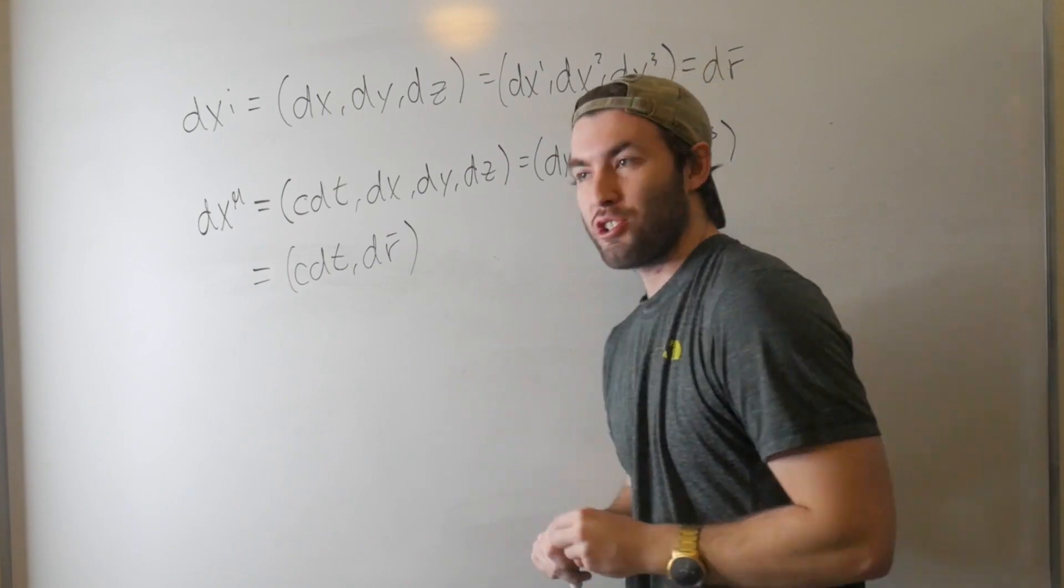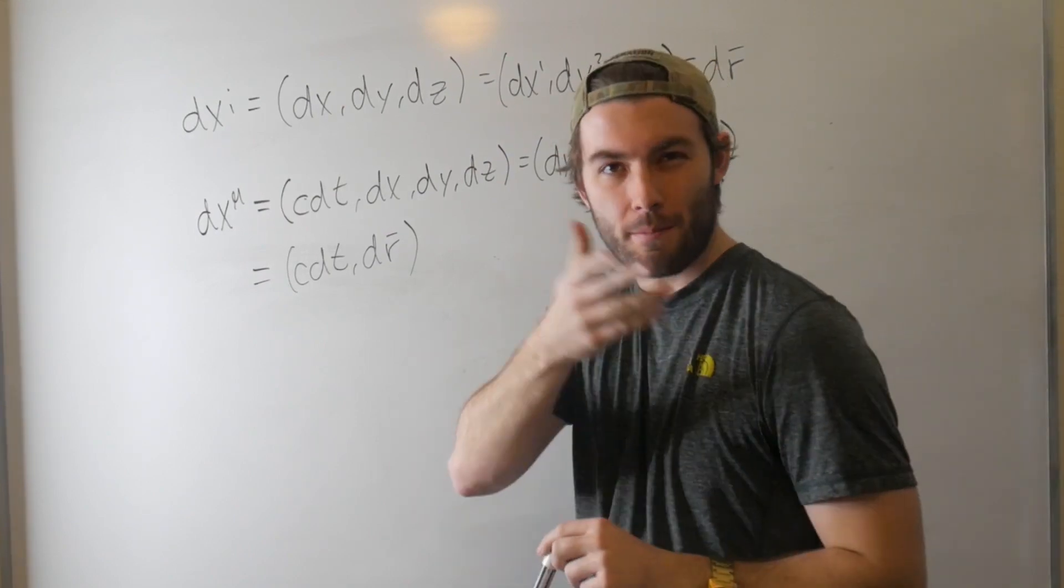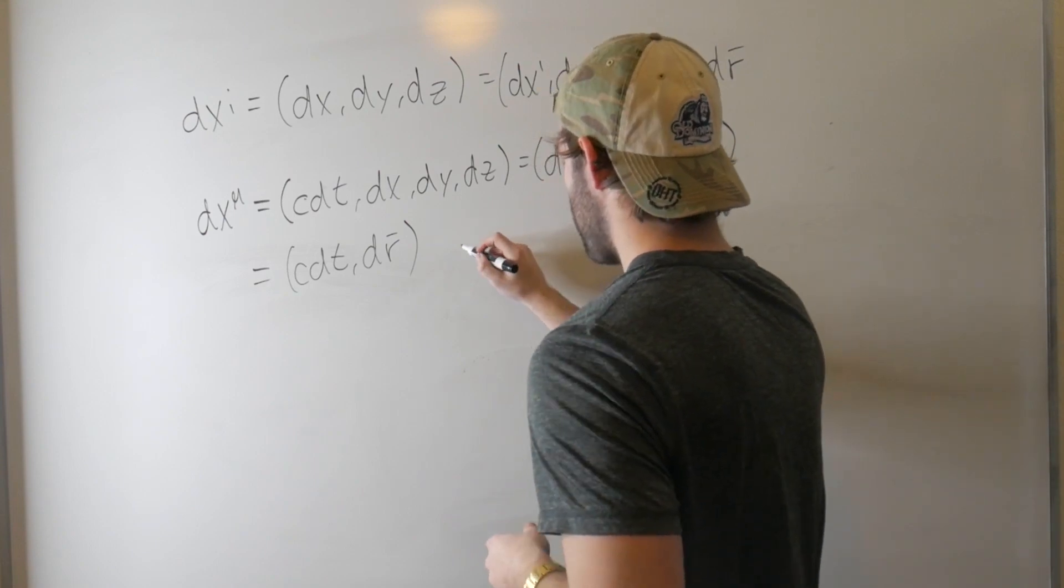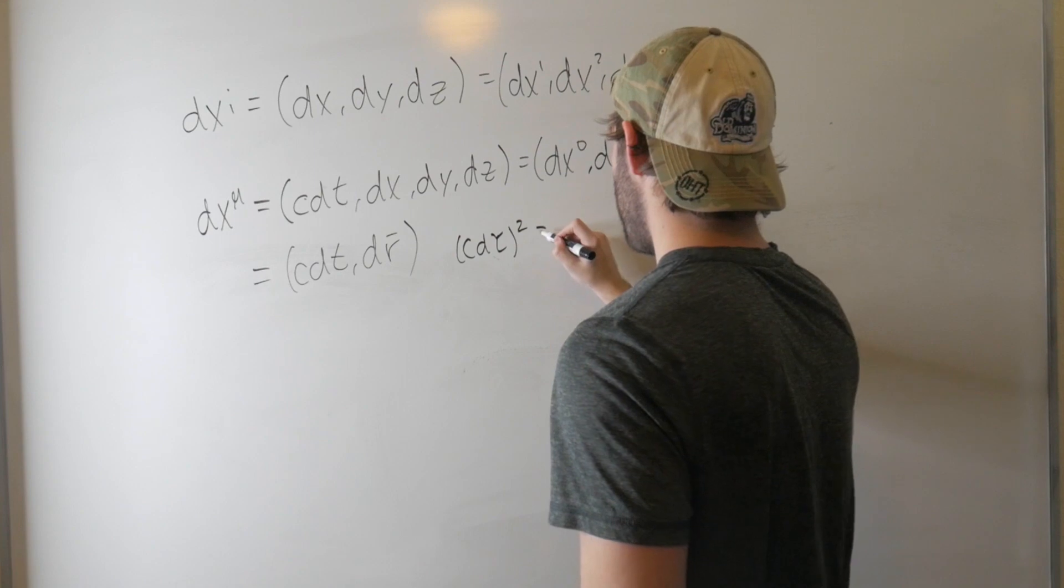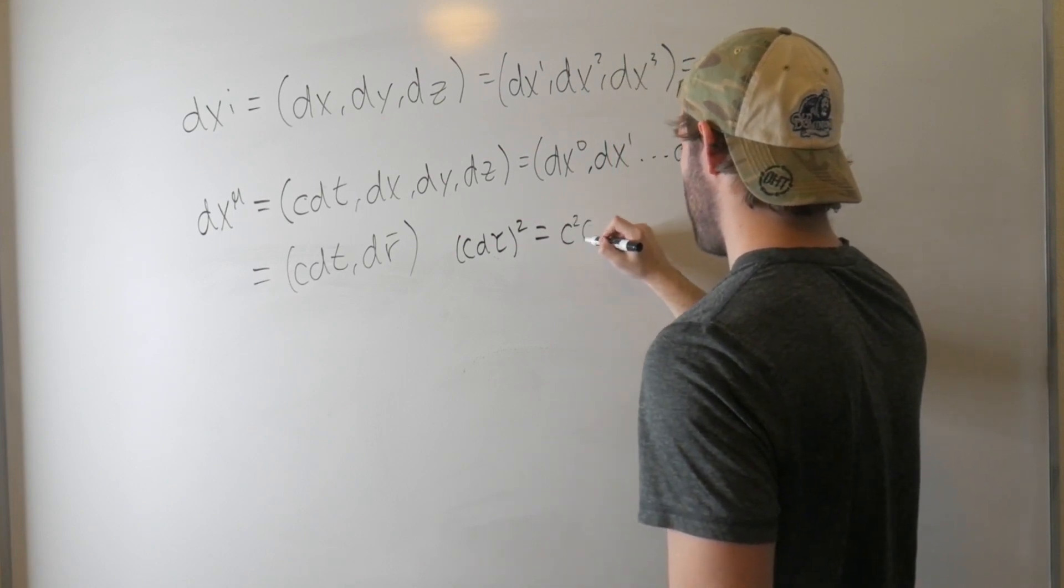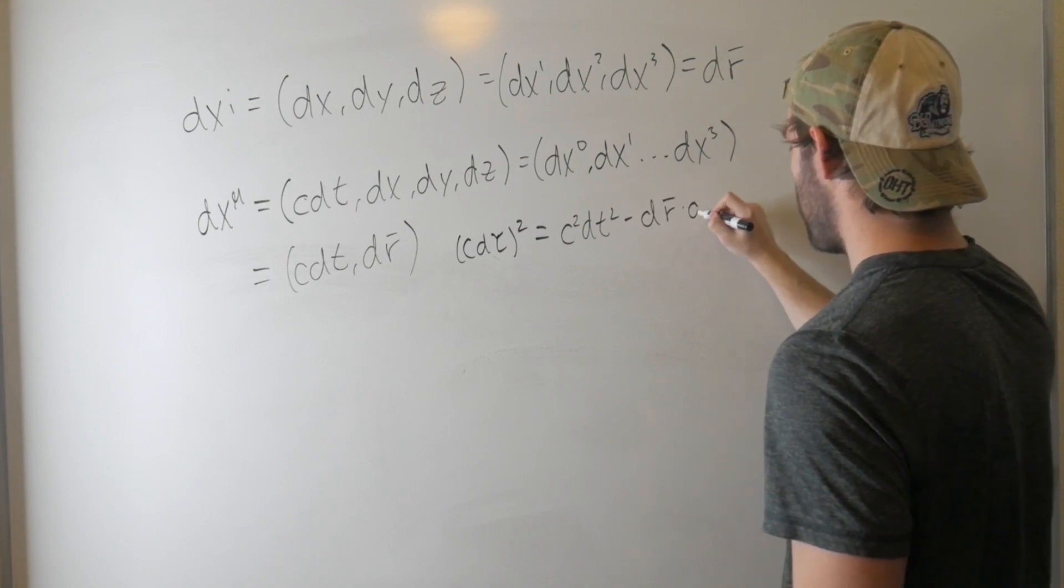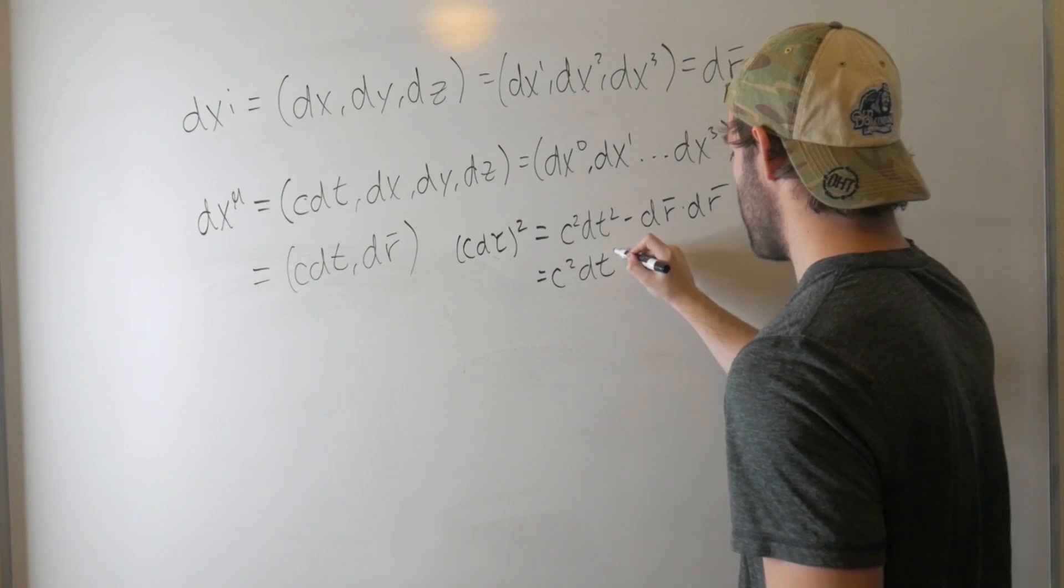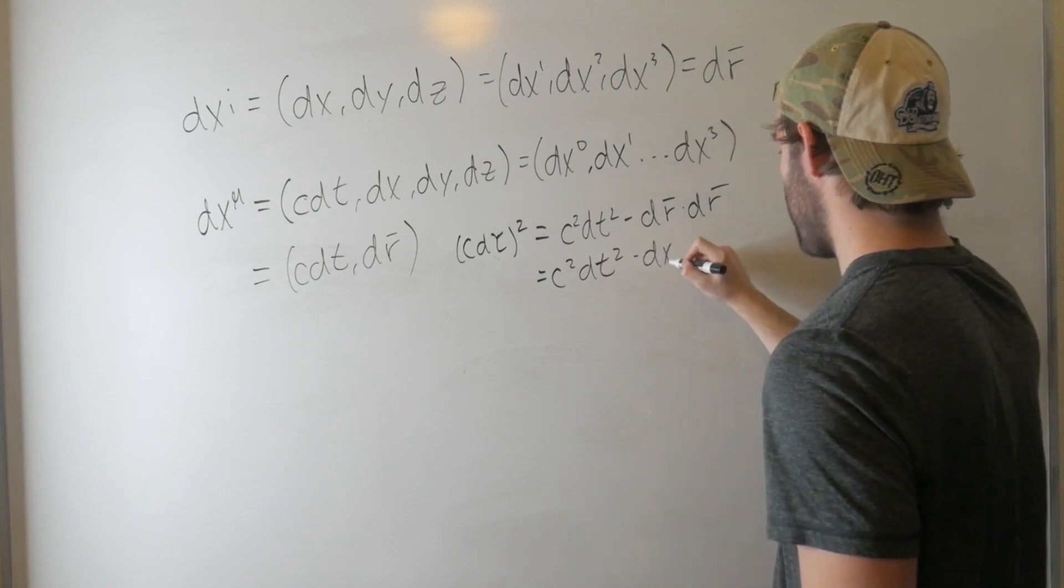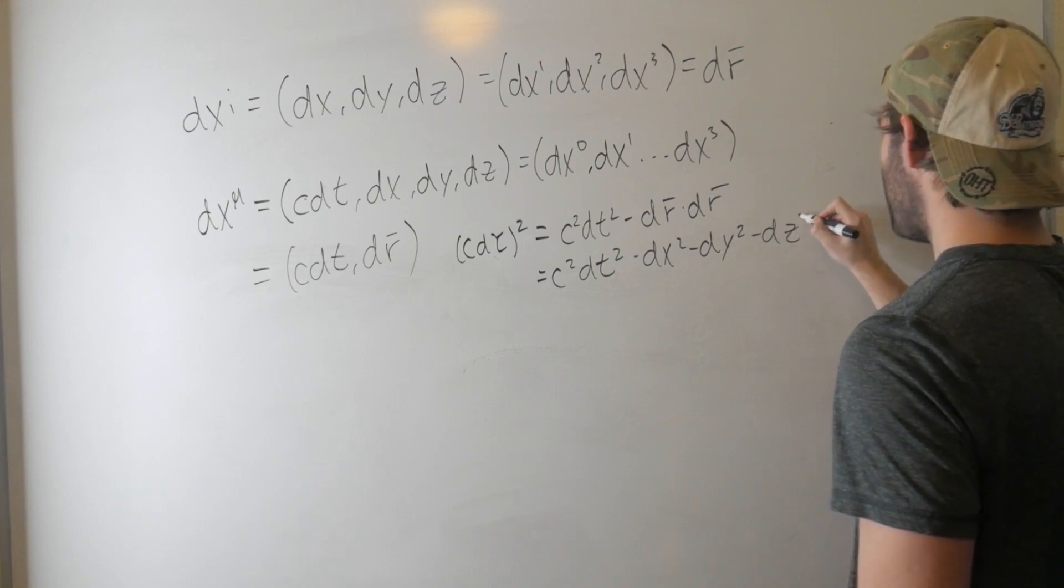Now any introduction to special relativity will tell you that the square of the proper time, times the speed of light, of course, can be expressed as c dτ² is equal to c²dt² minus the dot product of the spatial bit, so this is equal to c²dt² minus dx² minus dy² minus dz².